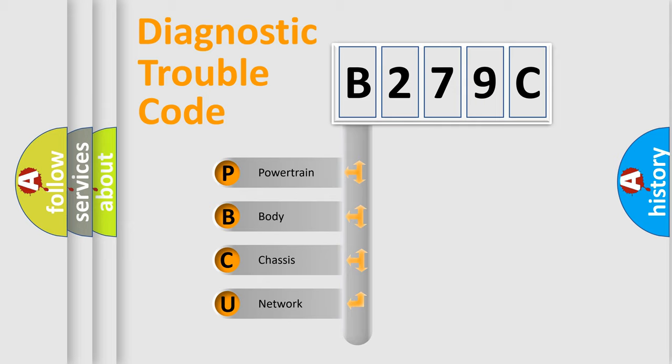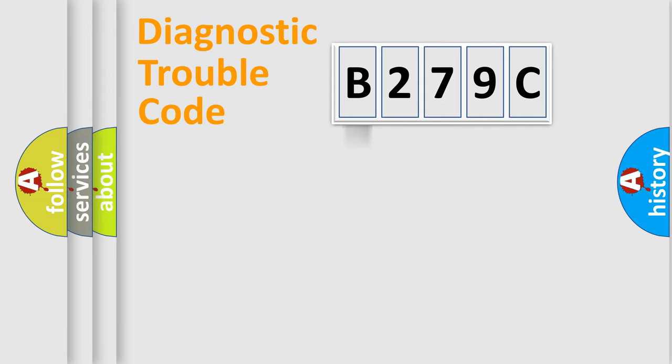We divide the electric system of the automobile into four basic units: Powertrain, body, chassis, and network. This distribution is defined in the first character code.